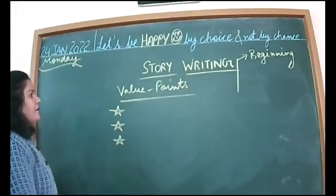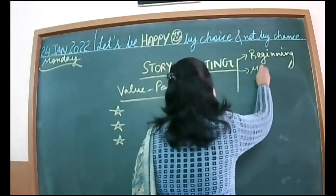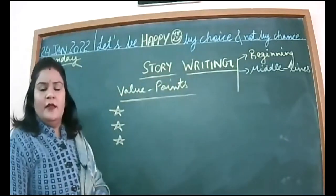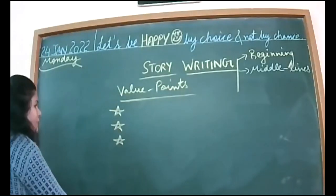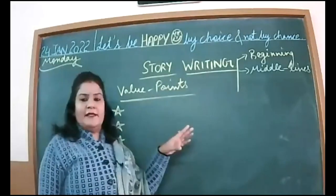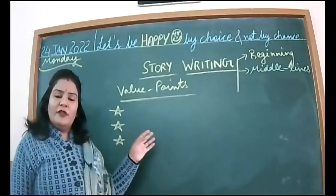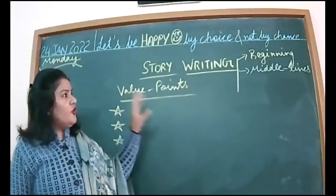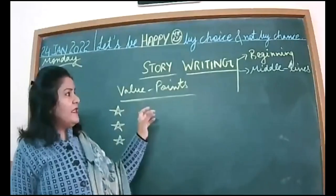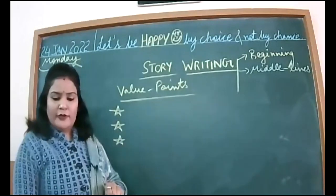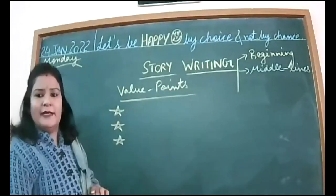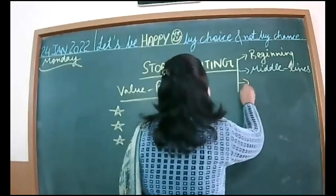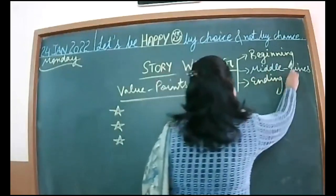Sometimes middle lines can also be given to you — middle lines are given but the beginning and ending are not there, and you have to use those lines. When beginning or middle lines are given in the question paper, you will use those lines by adding up your own ideas. It doesn't mean you will distort those lines — they must be used in the story. Then we have the next category when ending lines are given.